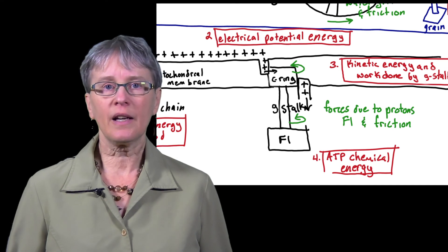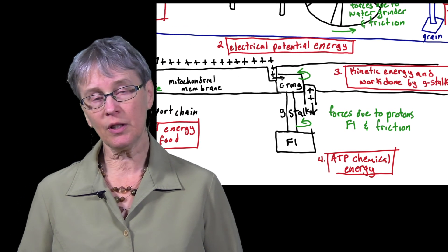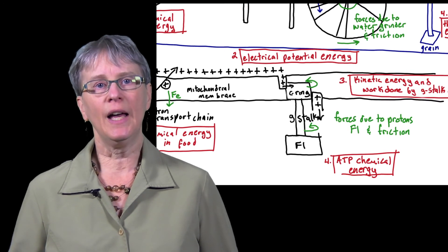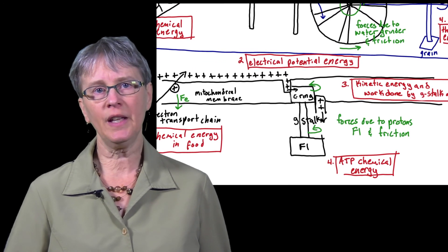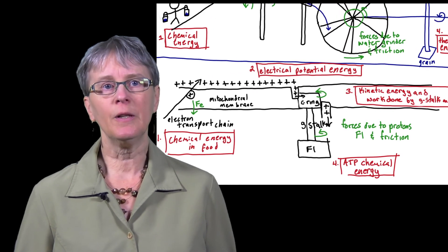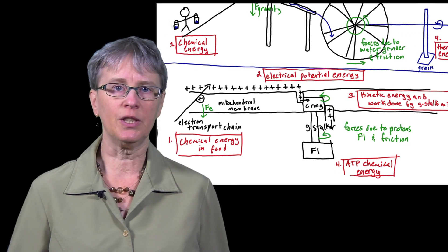So in terms of energy, the chemical energy of our food is converted into electrical potential energy, which is then turned into kinetic energy of the rotor and the work done by the rotor on the F1 complex to create conformational changes. And lastly, the energy is transformed into the chemical energy in ATP.